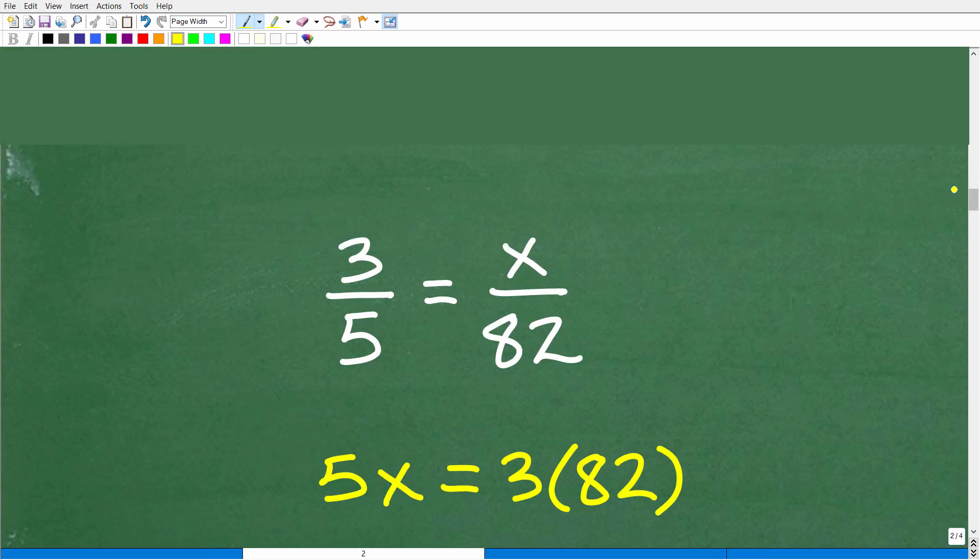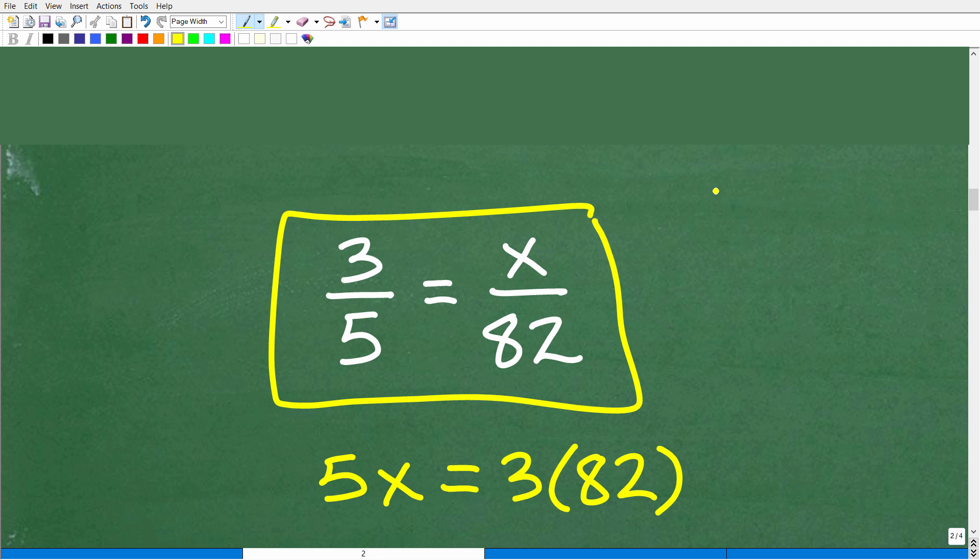The objective here is to solve this proportion. A proportion, by definition, is two equal fractions. Let me give you a simple example. If I have the fraction 1 half, let's think of another fraction that is equal to 1 half. How about maybe like 4 over 8? We could have 5 over 10, 3 over 6, 100 over 200. So a proportion is two equal fractions. Because ratios and rates are fractions in and of themselves, you can also define a proportion as two equal rates or ratios. But effectively, it's simply just two equal fractions.